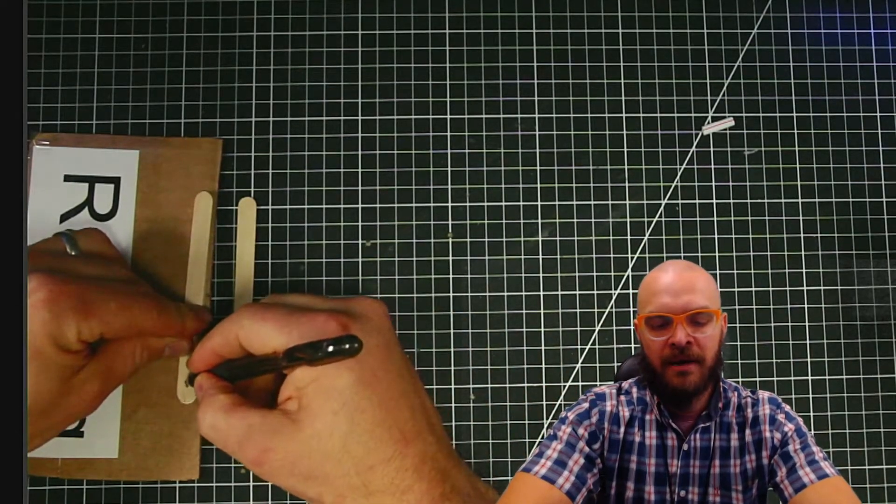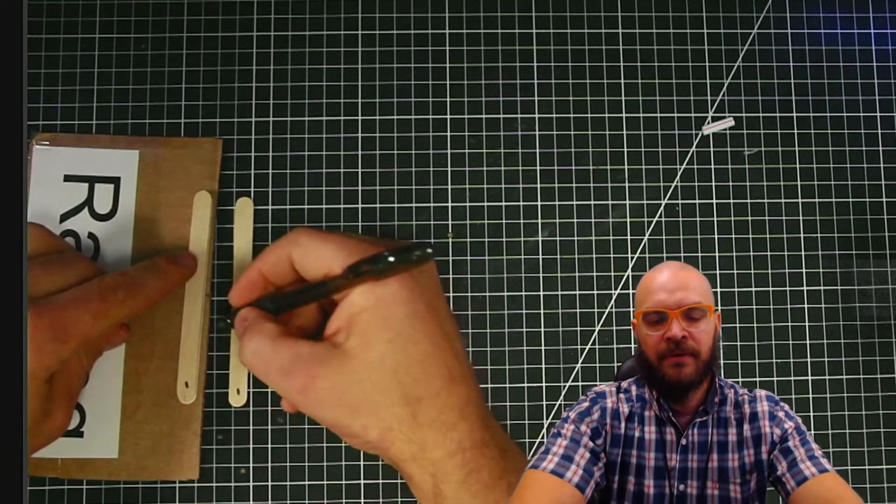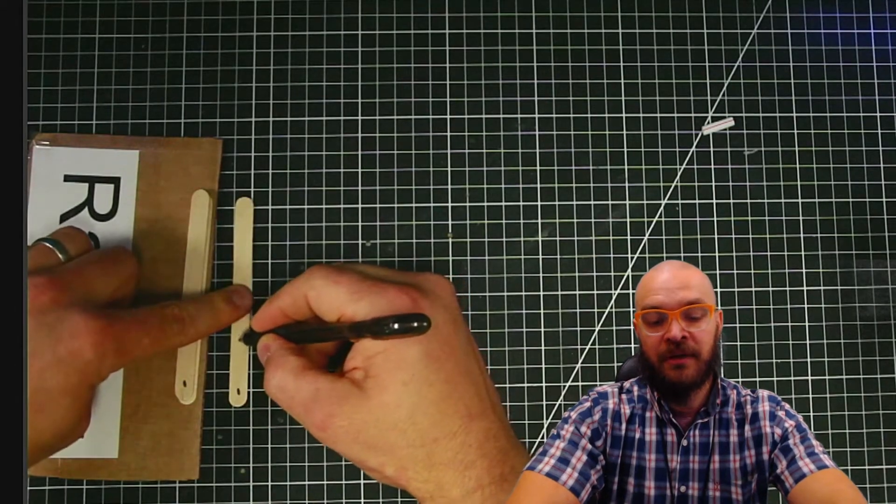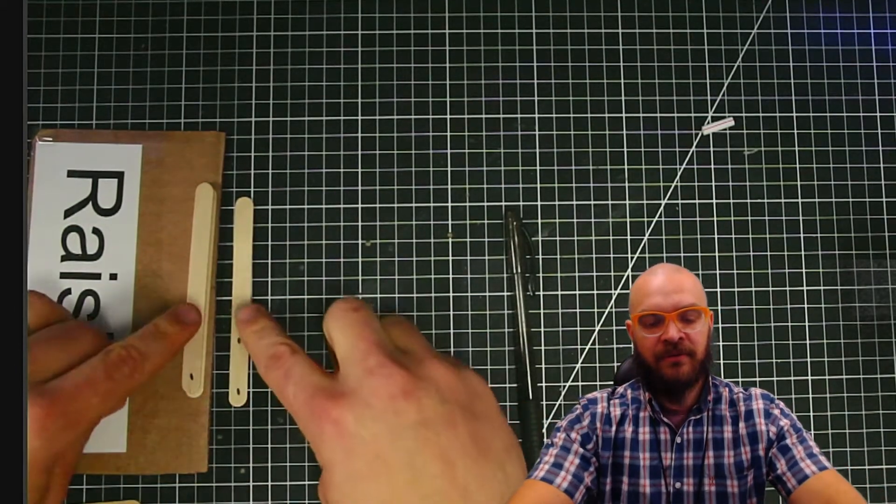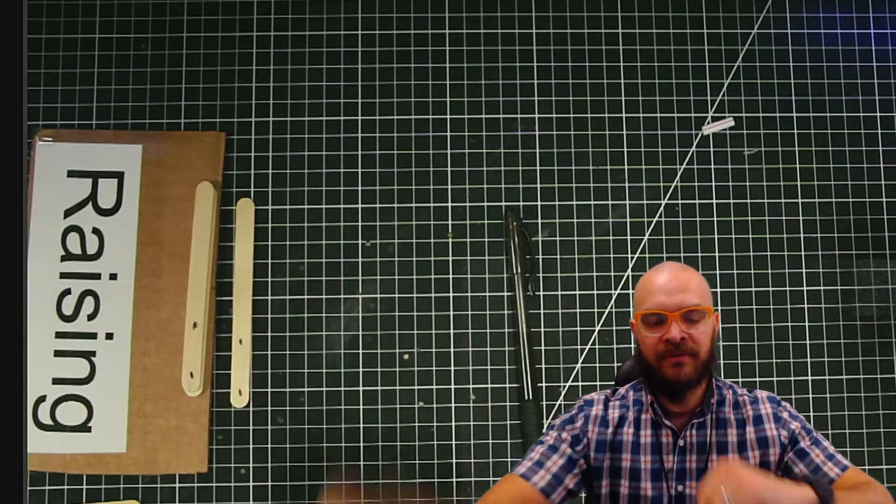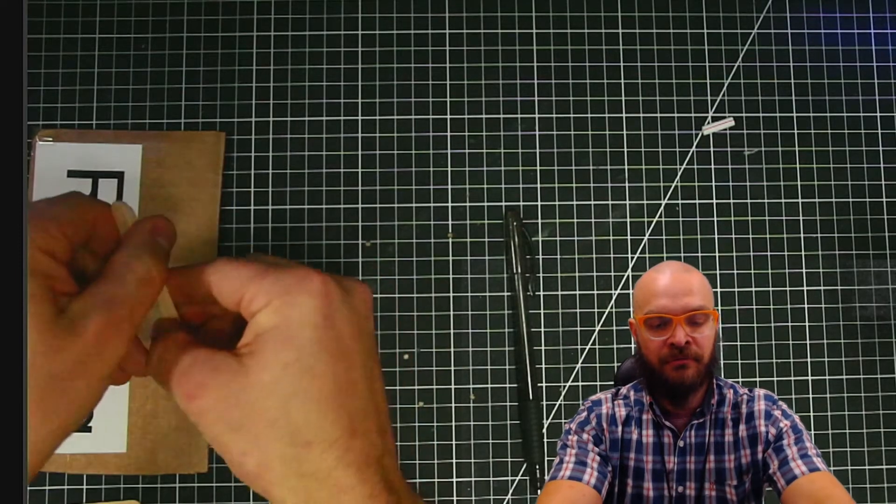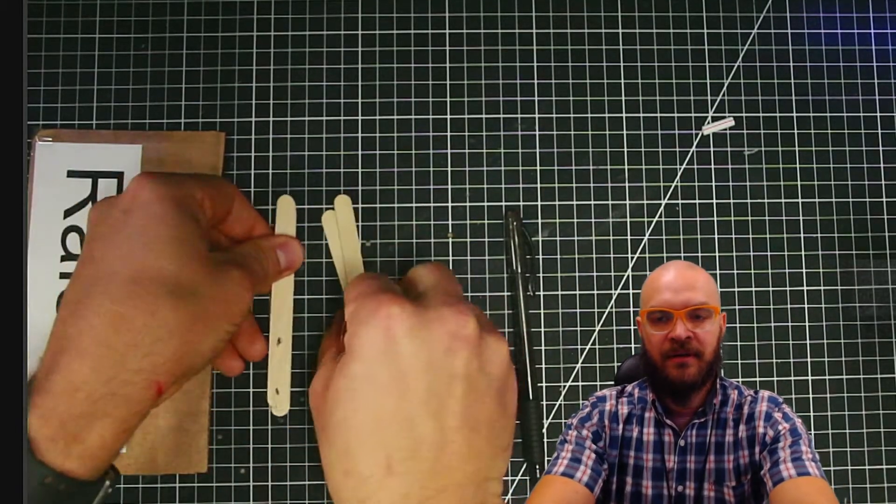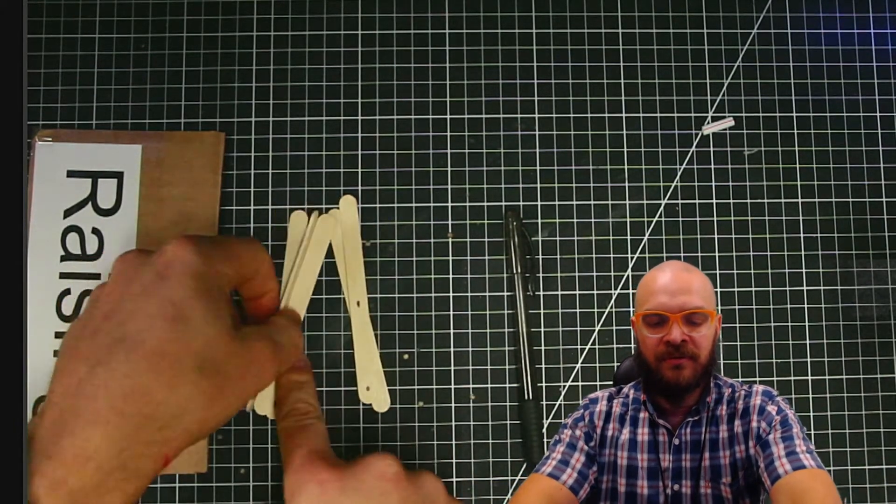So this bottom hole down here is going to line up with this bottom hole down here. And this hole up here should line up with this hole right here. So what we have is four popsicle sticks that are going to get drilled the exact same way. Well, that's easy. We can just drill all four of those at once and both of these all at the same time, just with these two sets of marks that we put down.